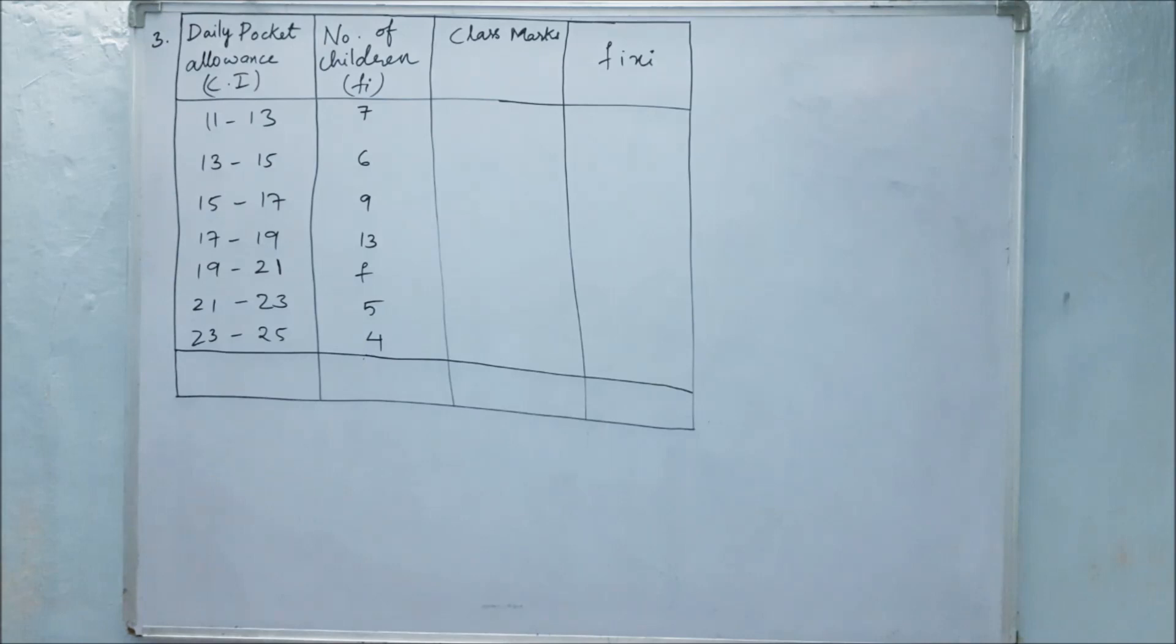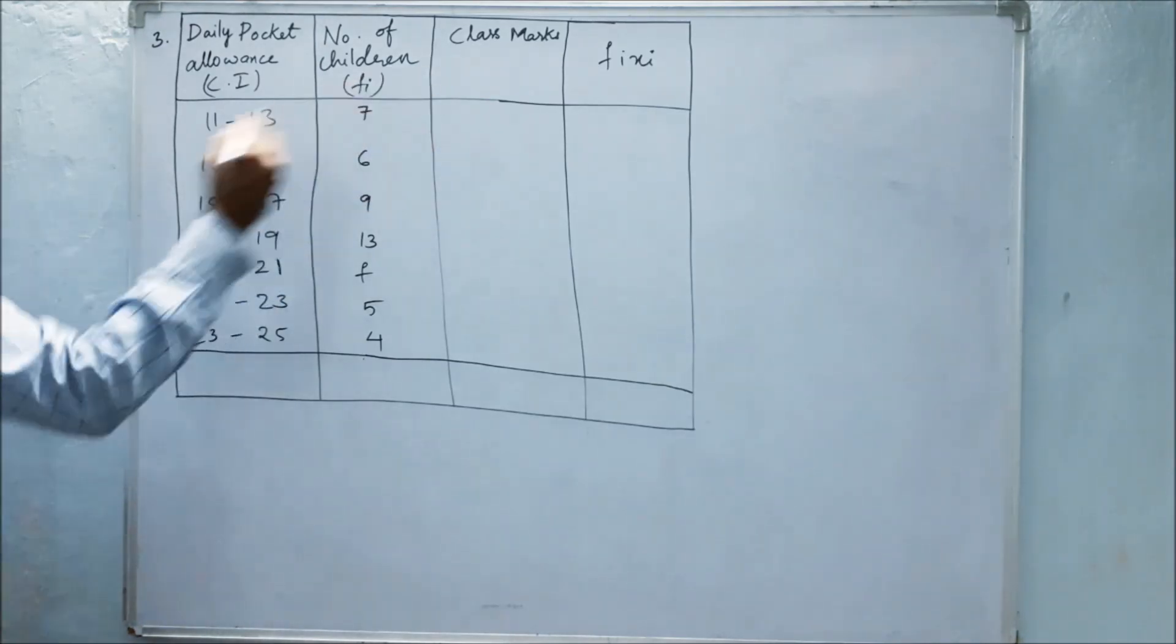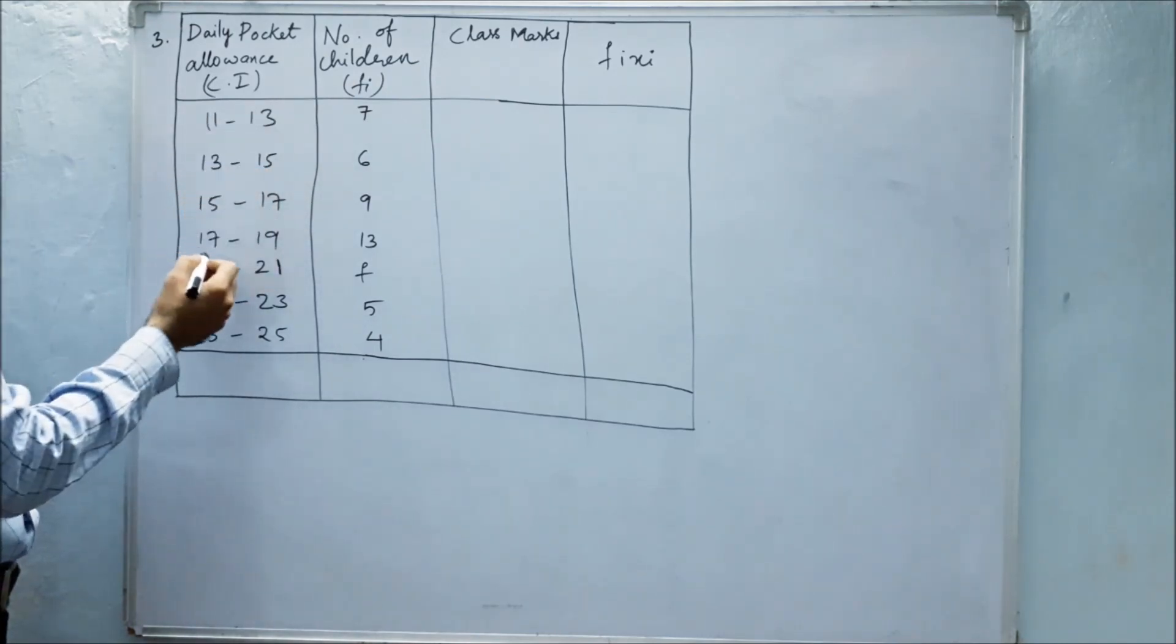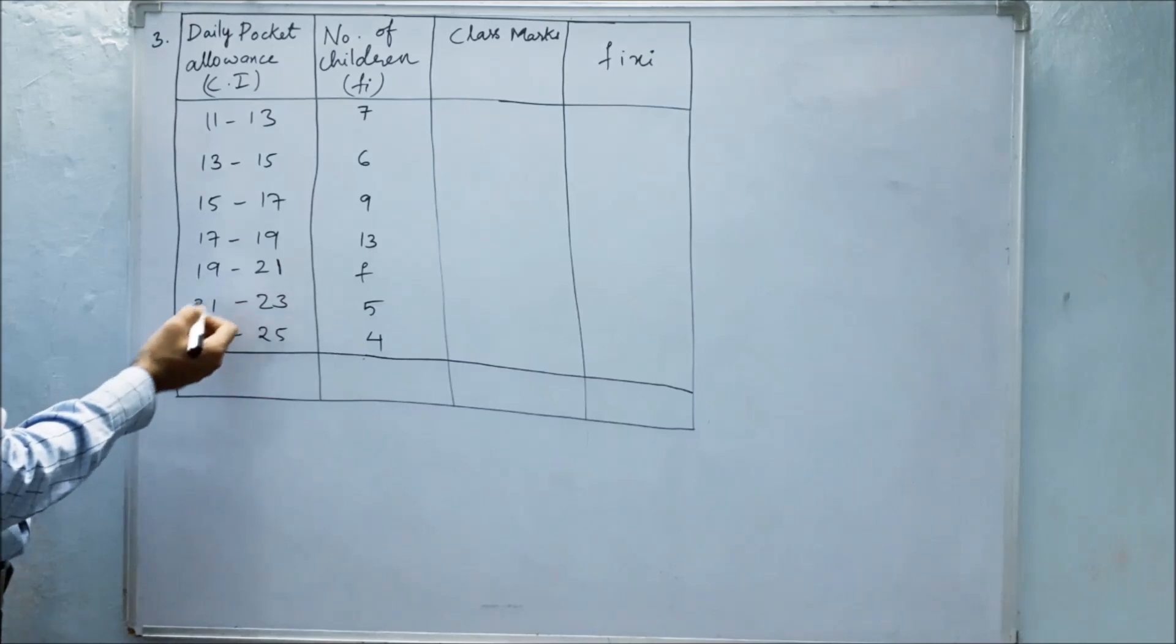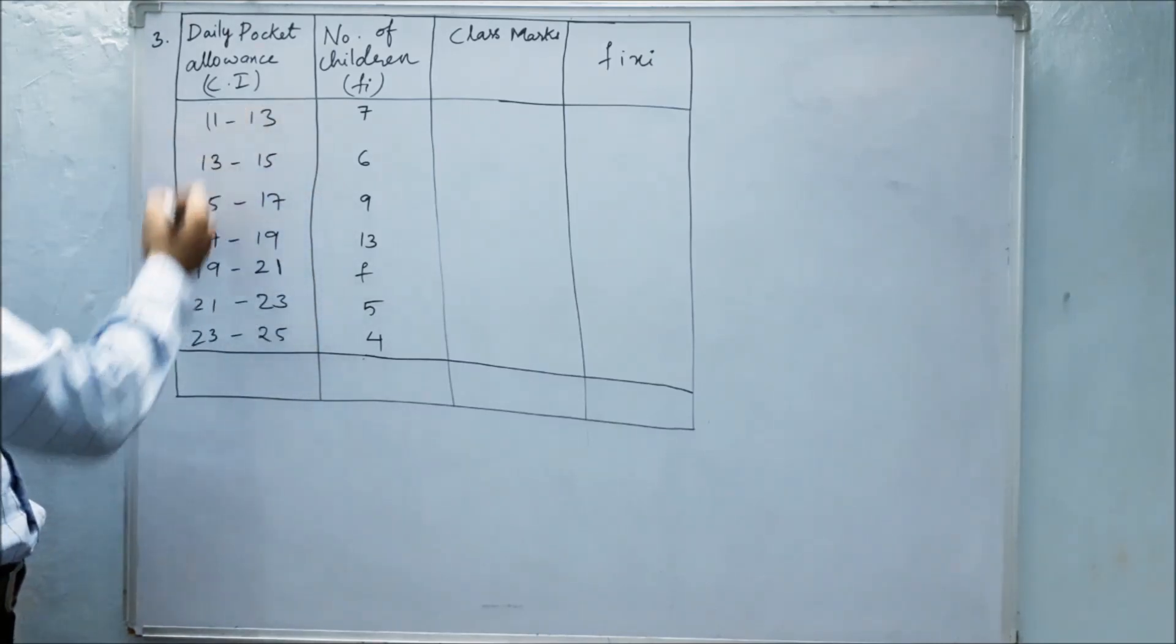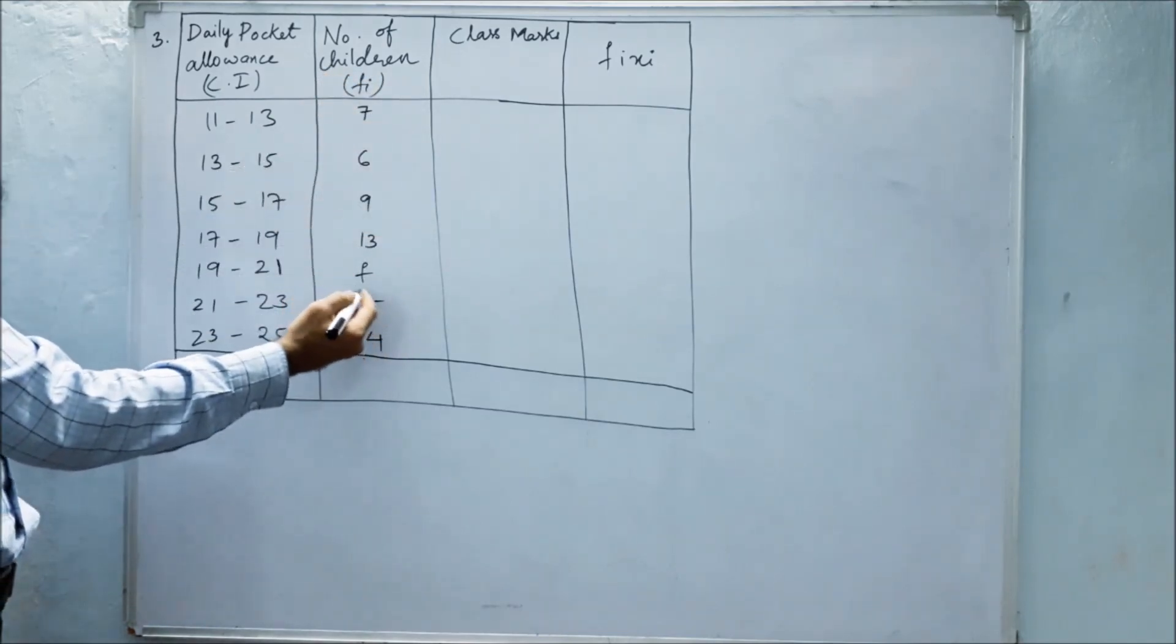Write the class intervals vertically: 11 to 13, 13 to 15, 15 to 17, 17 to 19, 19 to 21, 21 to 23, 23 to 25. So these are the class intervals, and here is the frequency where f is the missing frequency.